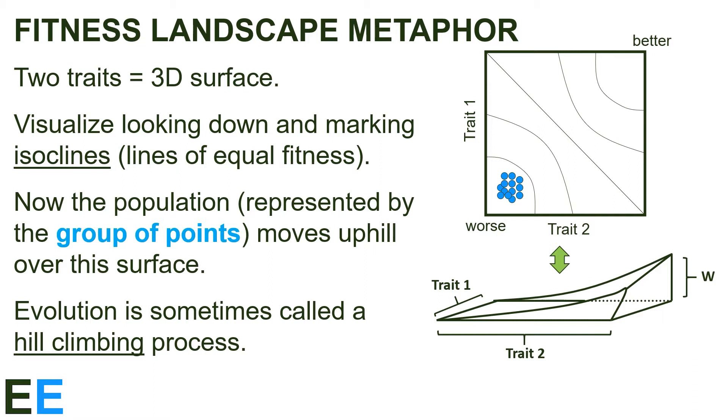Looking at our isocline figure, the population would move up and to the right. Keep in mind that it's not the individuals moving up the slopes themselves exactly like the animation, it's reproduction over generations creating new individuals at each new location that's really happening. This metaphor is why evolution is sometimes called a hill-climbing process.